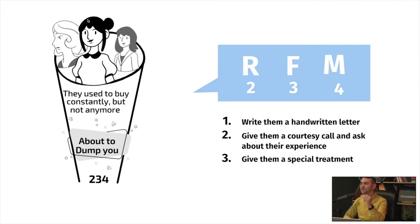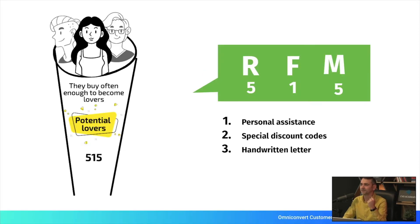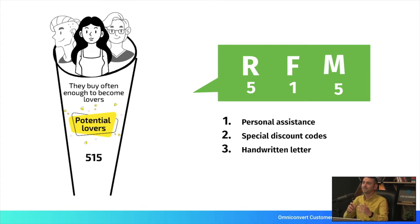The 'about to dump you' customers used to buy constantly but not anymore — their scores are two for recency, three for frequency, and four for monetary value. You can think of methods like writing them a handwritten letter, giving them a courtesy call to ask about their experience and why they stopped buying, or giving them special treatment. The same applies to 'potential lovers' — customers with high recency, high monetary value, and low frequency. The idea is to give them relevant treatment according to how important they are for your business.